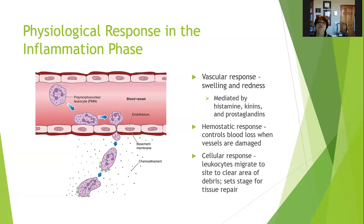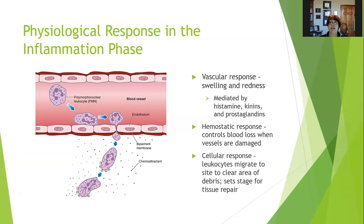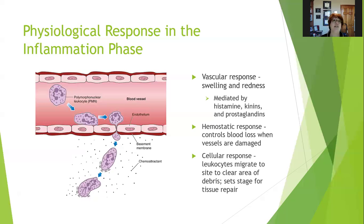The physiological responses during the inflammation phase are the vascular response, the hemostatic response, and the cellular response. The vascular response is swelling and redness — it's mediated by histamines, bradykinins, and prostaglandins, the chemical messengers that bring blood to the area and dilate capillaries. The hemostatic response controls blood loss when vessels are damaged — that's our clotting response and vasoconstriction. The cellular response is when leukocytes migrate to the site to clear the area of debris, and that cellular response sets the stage for tissue repair. The capillaries have to become more permeable so leukocytes can get out into the interstitial space and do their job.